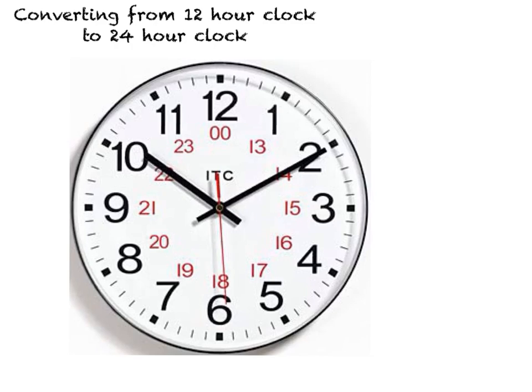Hello and welcome to this tutorial for converting times from 12-hour clock to 24-hour clock. You can see on your screen an analog clock which has hours 1 to 12 in black writing and then from 1300 up to 00 or 24 hours, which is midnight. If you watch the clock, it starts from 00 to 1am.